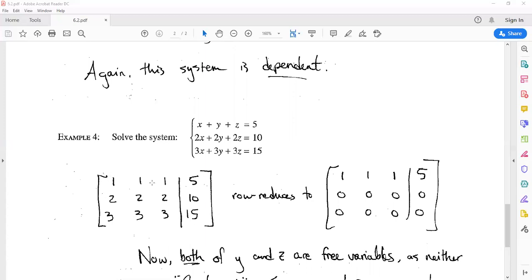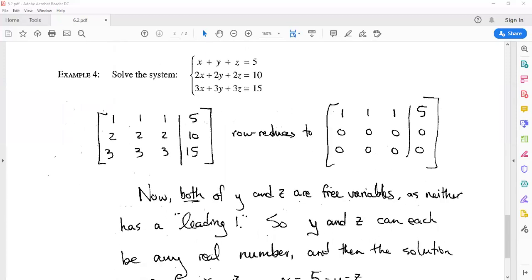If we do Gauss-Jordan elimination to this guy, we get a matrix that looks just like the first row with the bottom two rows now becoming zeros—all zeros, all zeros. So now we don't have a leading one for either of y or z, so now both of those are free variables. With a choice, we can pick any y value we want and any z value we want.